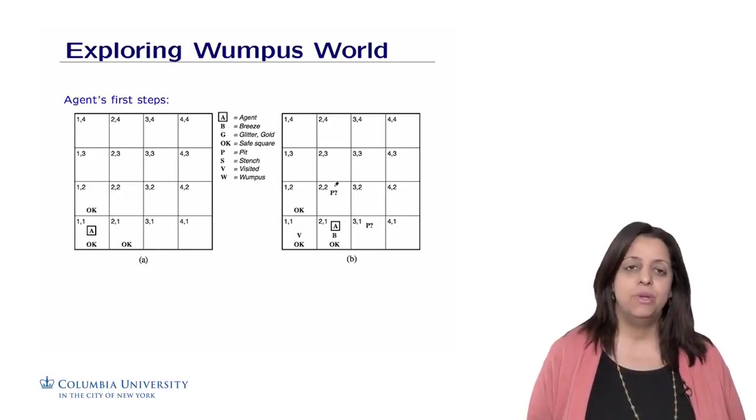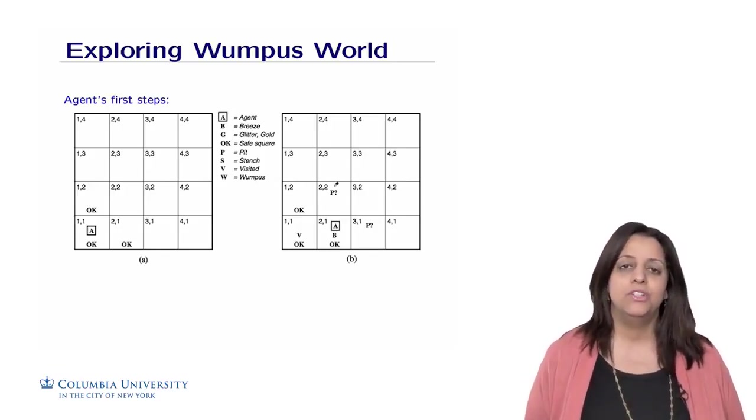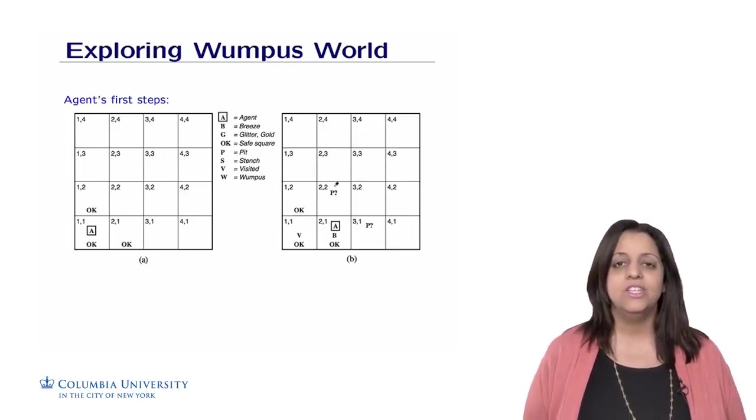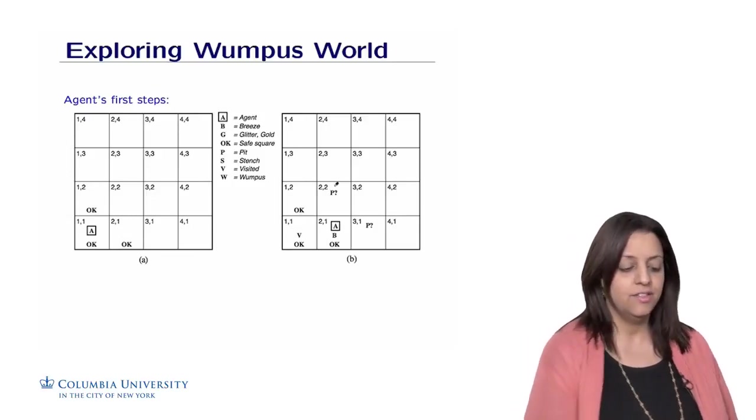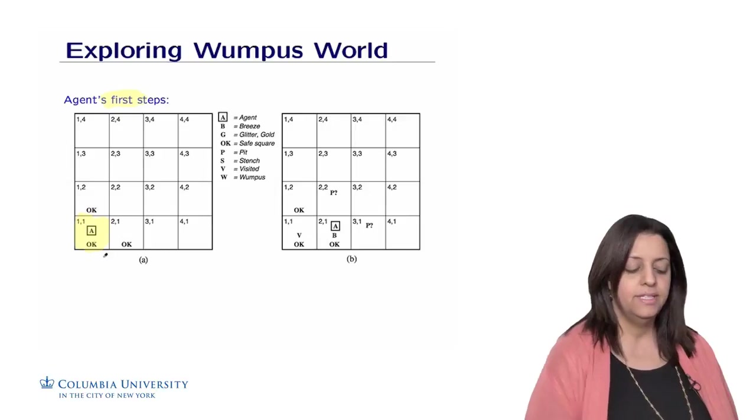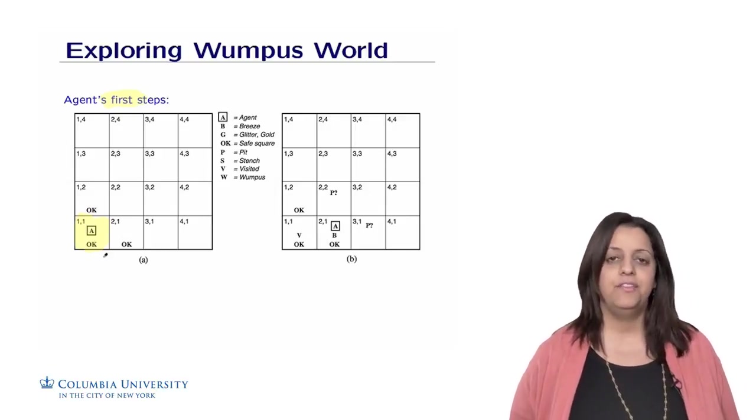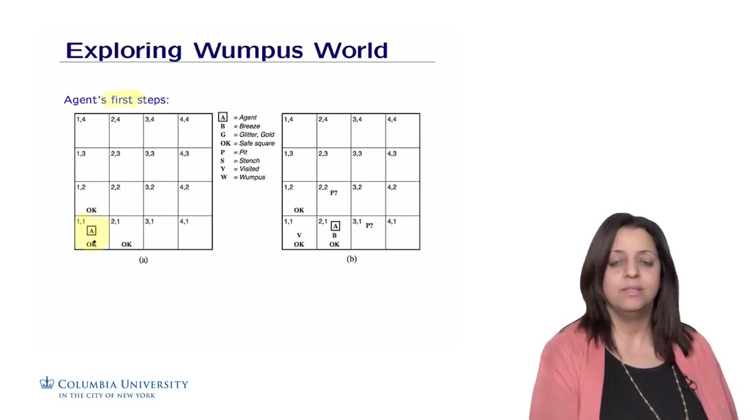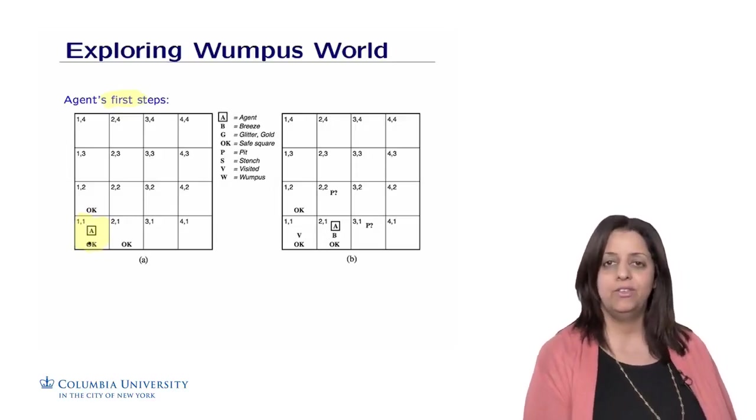Now let's use some informal language using symbols in the grid and do some logical reasoning about how the agent should evolve in the cave. Initially, the agent is in the first room, and we know that by default this room is safe for the agent. We're going to add the symbol OK to say that the room is OK to be in.